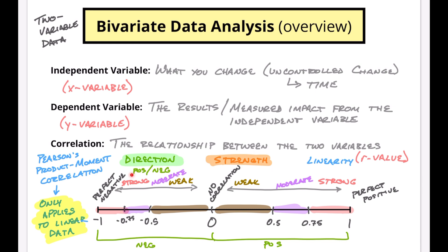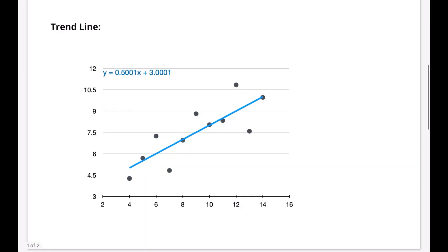Linearity is the third measurement of correlation. It's really just about looking at the data to see if it's linear or not — that's all you can do.